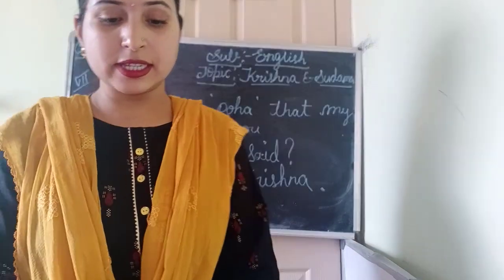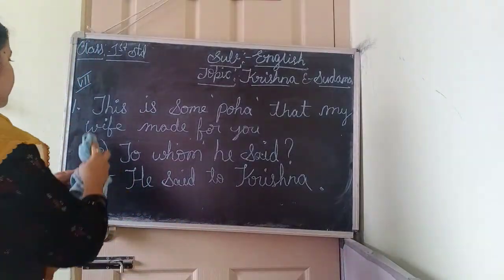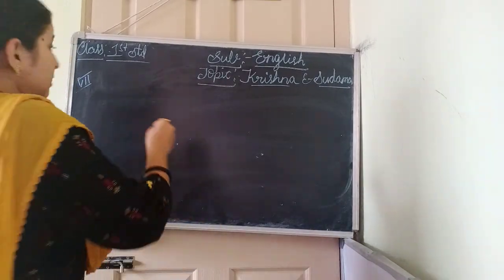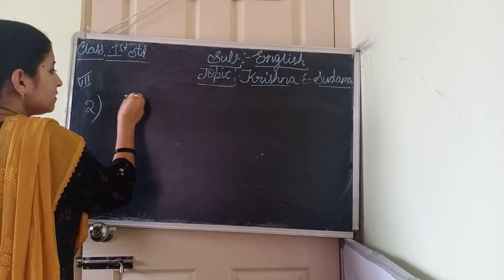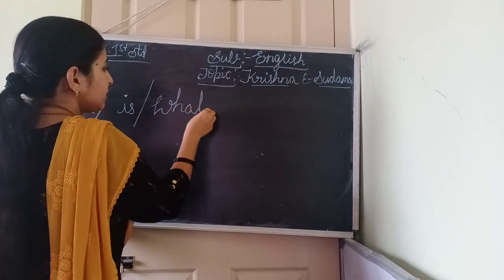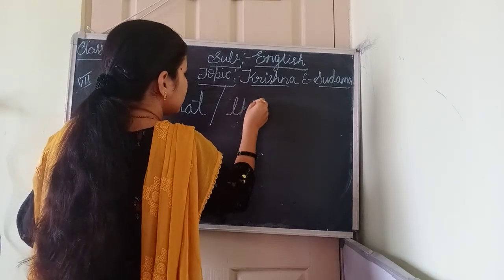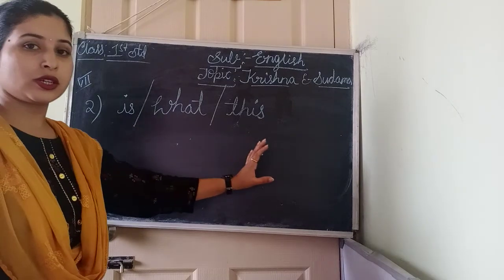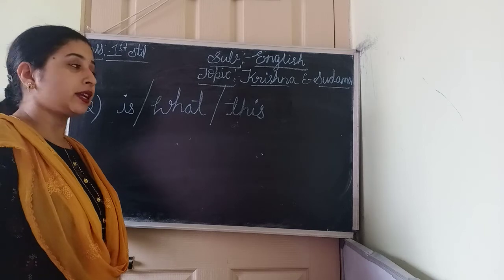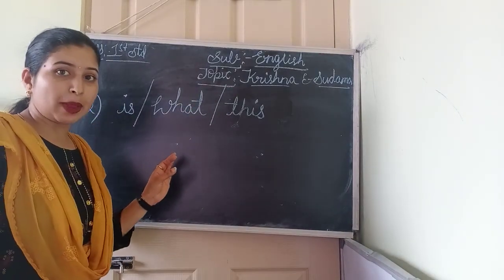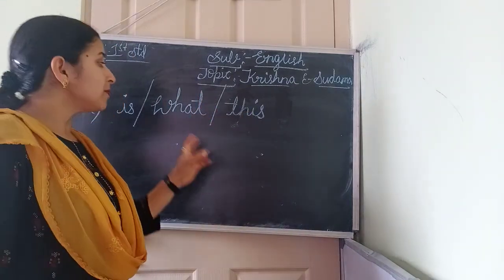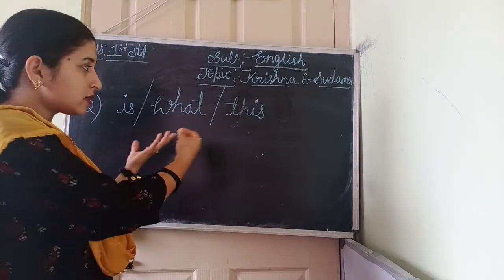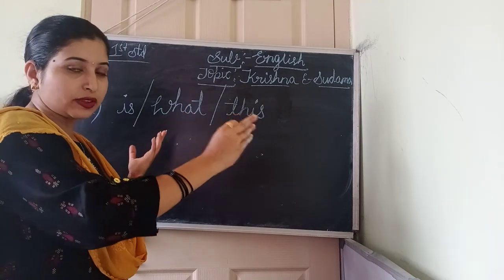The next question — I hope you all have done it. The next one is: the words are shuffled — 'is / what / this' — we need to arrange these words properly and make a proper sentence. We have to remember: capital letter at the beginning, and where to put the full stop or question mark. Here the word 'what' is a question word, so this is easily a question sentence. At the end we need to put a question mark, not a full stop.